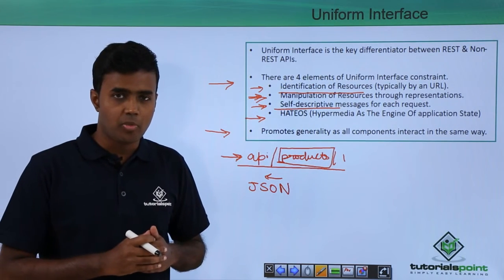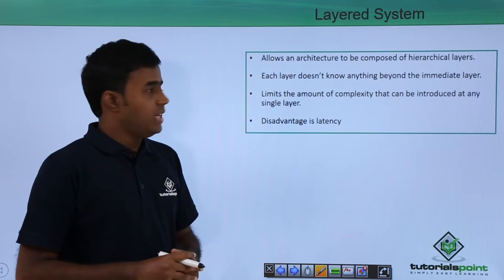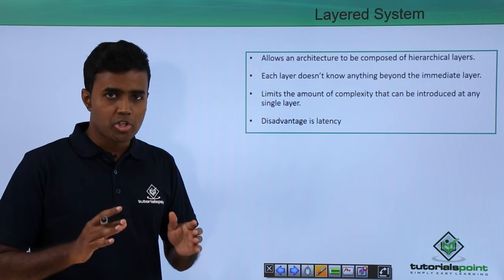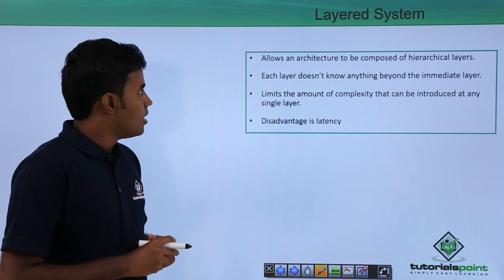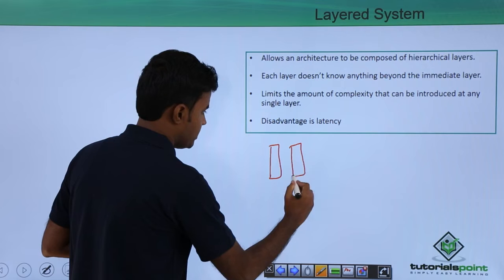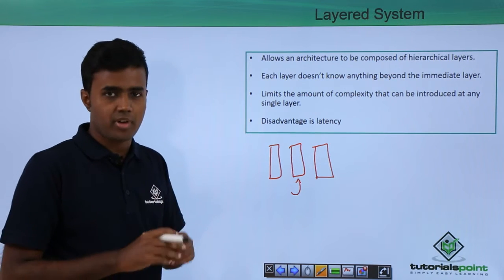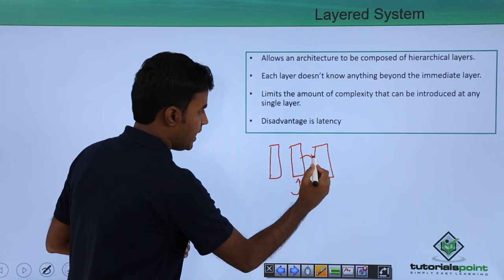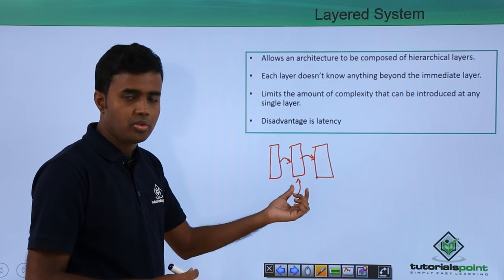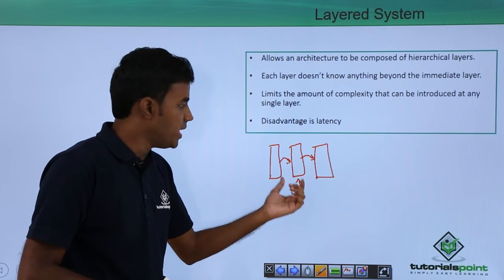The next constraint is the layered system constraint. It states that the architecture needs to be composed of multiple layers, where each layer is responsible for a specific function and only interacts with the layer immediately next to it. One layer may not know anything about the rest of the layers other than the one immediately next to it.